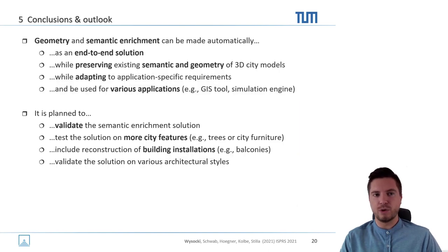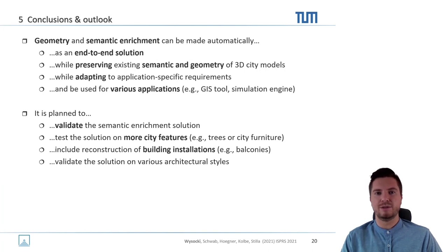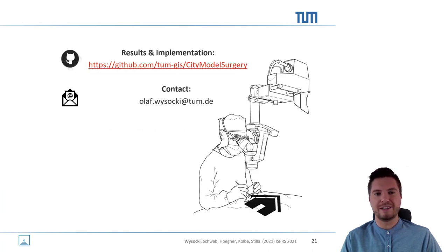To conclude, we proved that geometry and semantic enrichment can be performed automatically. It is an end-to-end solution that preserves the existing semantics and geometry of 3D city models while adding further geometric and semantic enrichment, and adapts to the specific requirements of the user. It can be used in various applications including GIS tools and simulation engines. Future work includes validating the semantic enrichment part, testing on more CityGML features and more building elements such as balconies, and testing on different architectural styles beyond Ingolstadt, Germany. Thank you for your attention — please check the results and implementation in the GitHub repository linked here, and feel free to contact me.